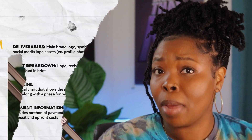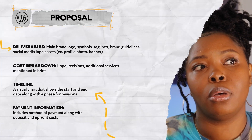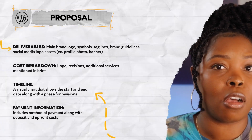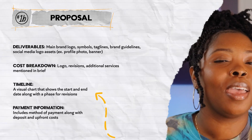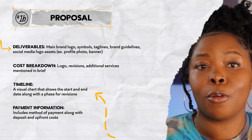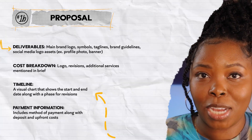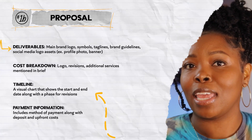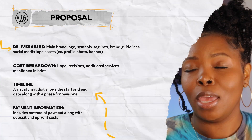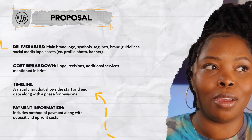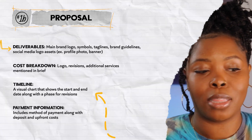After the brief, I send the client a proposal — basically a PDF. In the proposal, I repeat the deliverables so they know exactly what to expect, I give a cost breakdown listing each item with its cost, a timeline for the first round, and all my payment methods. I'll say 'look this over, let me know if you have questions, if you approve let me know, if you want changes I can update it.' Once they say yes and make the deposit, I start the research phase.